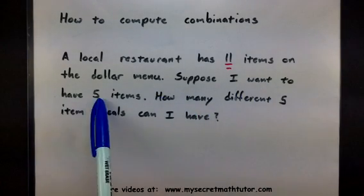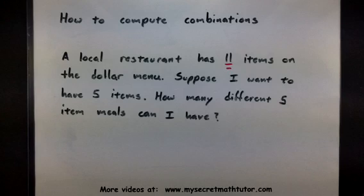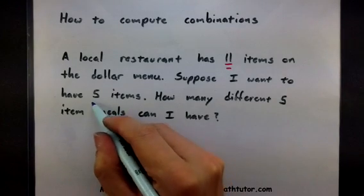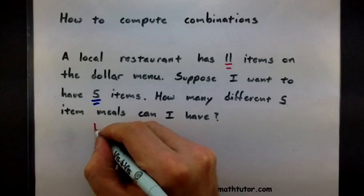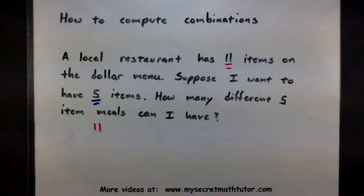How many things am I selecting? Looks like we want to form these five item meals. So I'm selecting a group of five. Let's go ahead and plug that into the formula and see what this looks like.